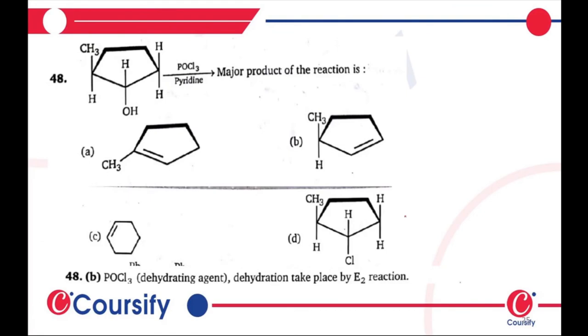POCl3 is a dehydrating agent. With OH and H+, what will happen? Dehydration—two molecules elimination. The answer is B, at positions 2 and 3.